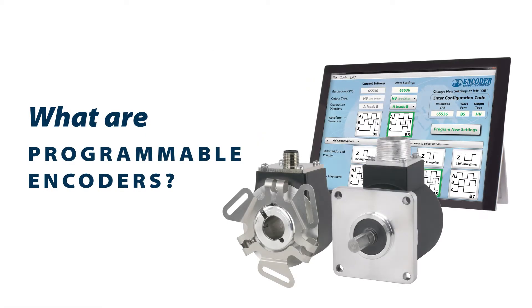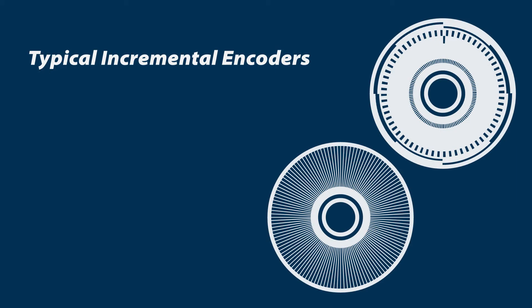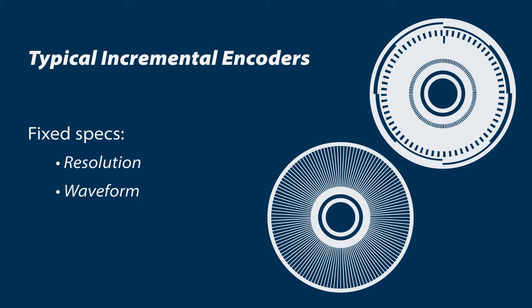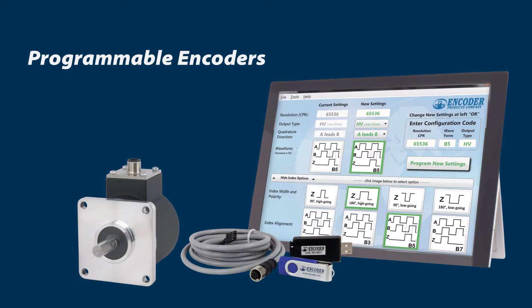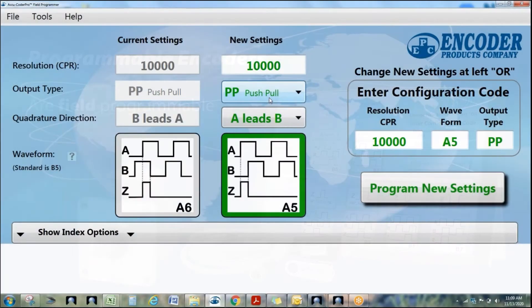So today we're discussing programmable encoders. Up until the recent invention of programmable encoders, what you order is what you get forever. When you ordered an encoder, those lines on the disc are printed on the disc and the electronics are also whatever you buy them as. A programmable encoder allows you to change that — instead of being stuck with the resolution of the lines on the disc you ordered, our encoders actually allow you to reprogram the encoder to any resolution you want.